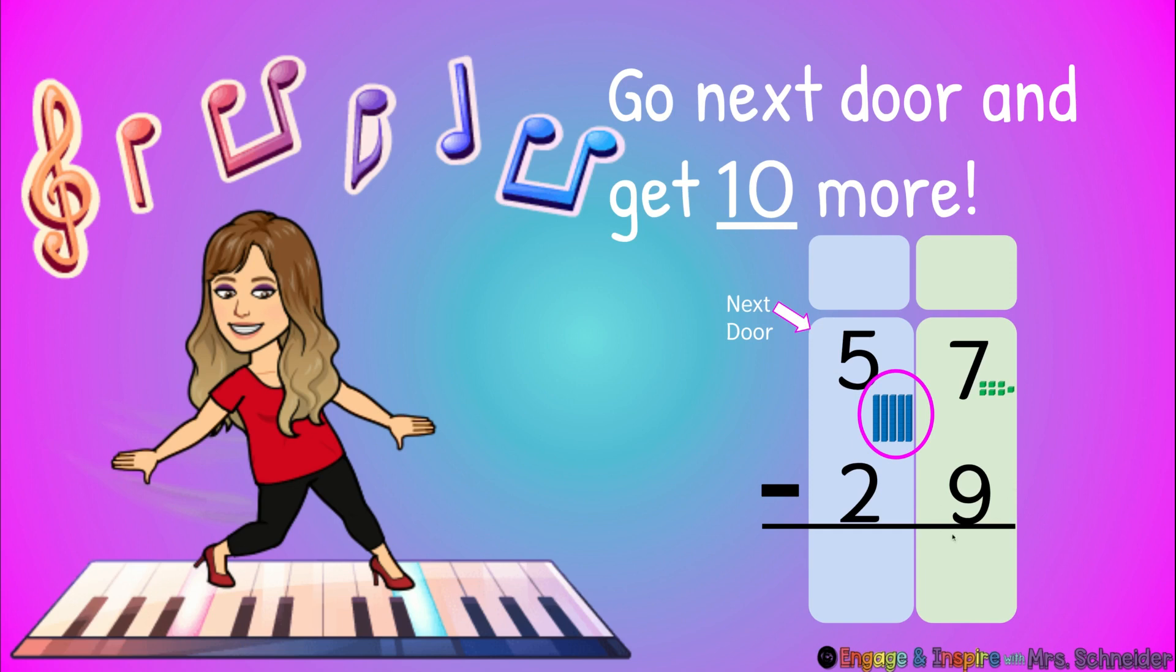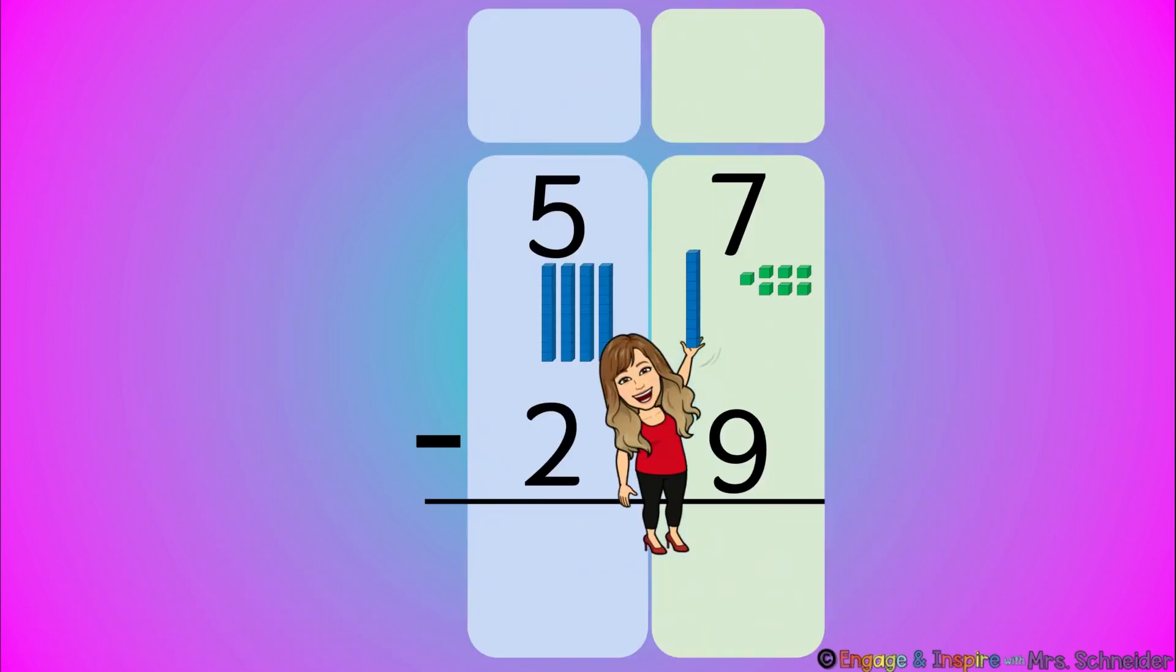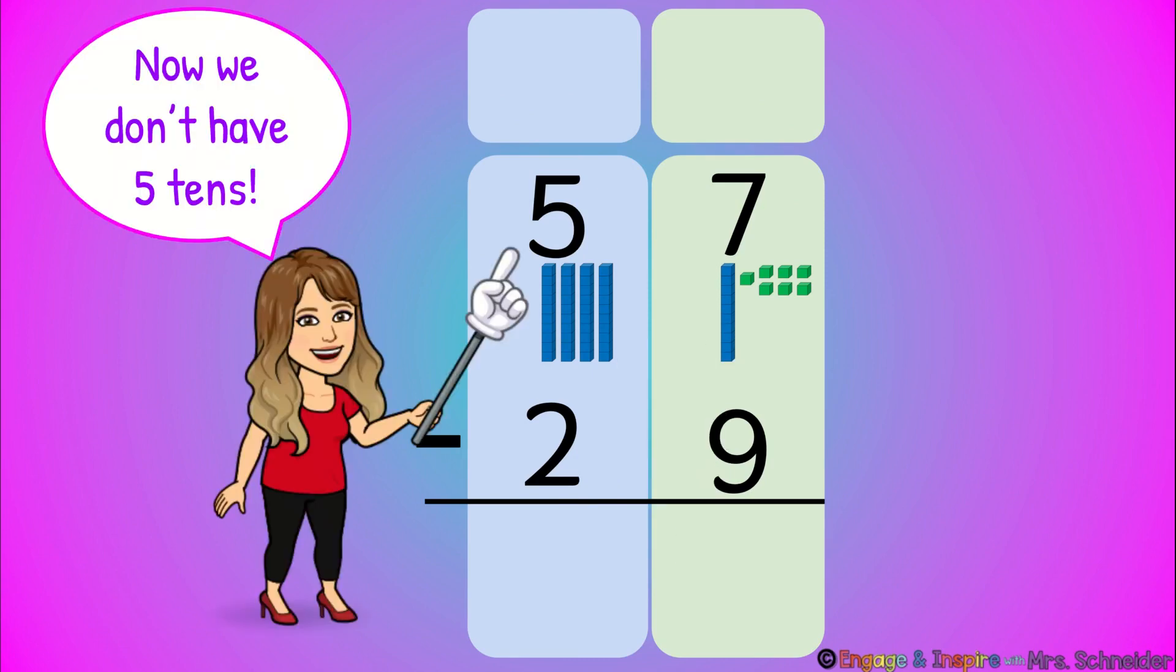So if the bottom number is bigger than the top, nine is bigger than seven. So if the number on the floor is bigger, we're gonna go next door to the tens place and we're going to get ten more. We're gonna take one of the tens rods. Here we go. We went next door. We're gonna take the tens rod over to the ones place and now we have to fix our algorithm.